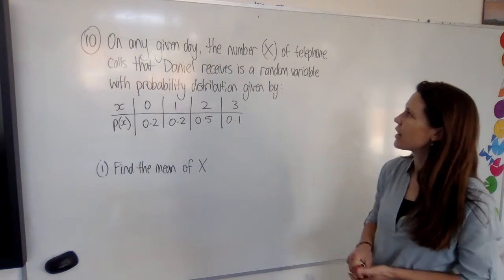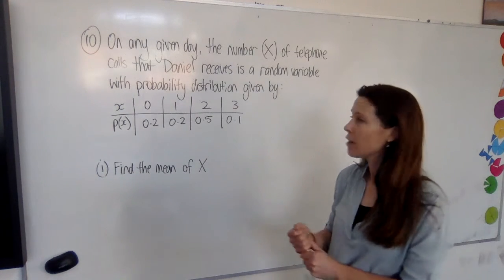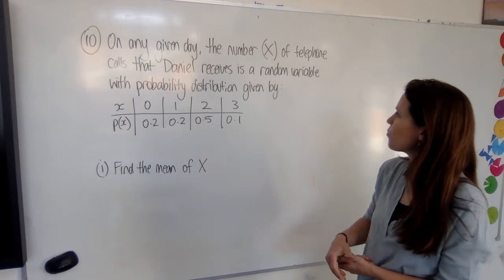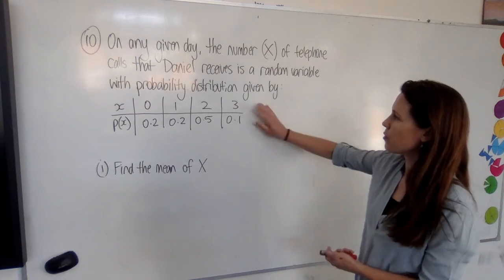Question 10. On any given day, the number X of telephone calls that Daniel receives is a random variable with this probability distribution.